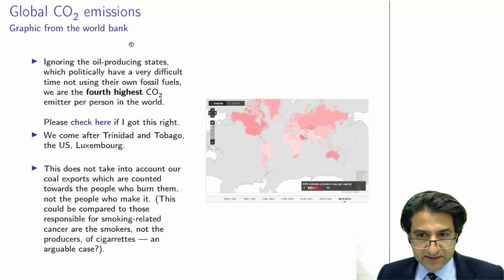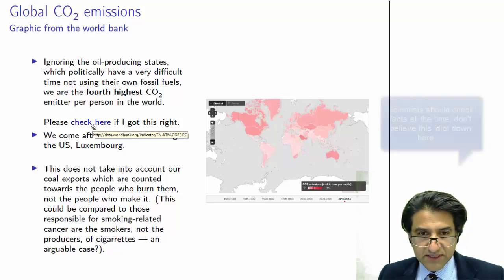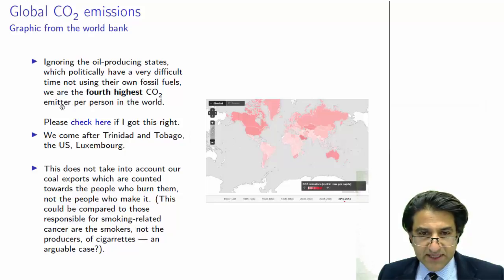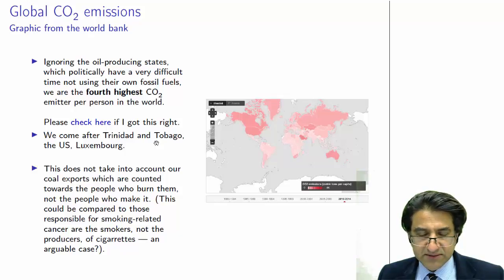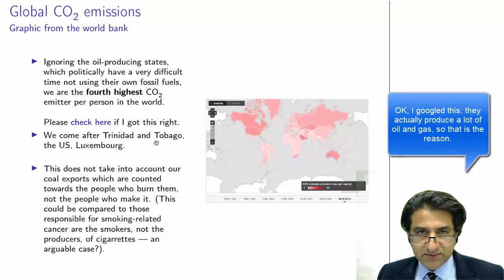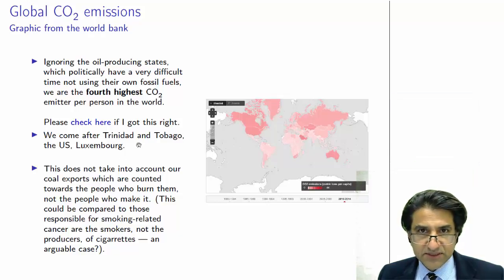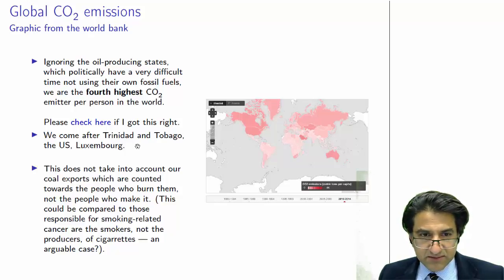We come after Trinidad and Tobago, the US, and Luxembourg. I'm not 100% sure why Trinidad and Tobago are so high — I think they have quite a lot of industrial processing, possibly an alumina refinery there that uses a lot of energy. The US of course is a big user. Luxembourg is a very rich nation and I think it burns coal heavily. So we're up there in terms of per capita emissions.